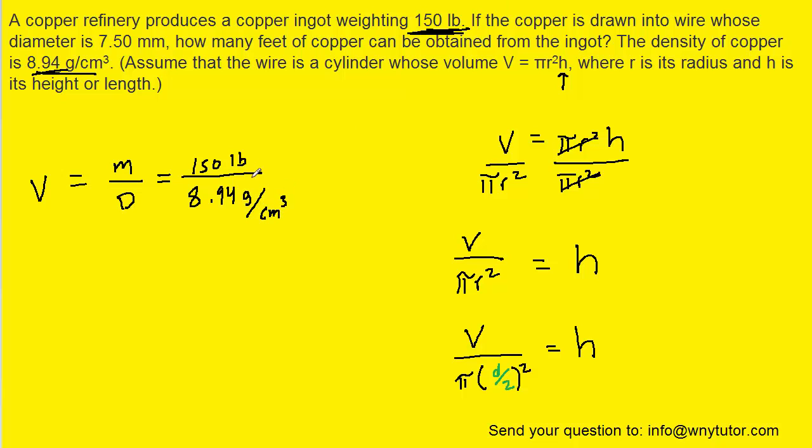But what we need is for the units of mass to cancel. And right now they're not going to cancel because one is in pounds and the other is in grams. Well if you open to the back of your chemistry textbook you will see that we have a conversion from pounds to grams. And according to that conversion we see that one pound is equivalent to 453.59 grams.